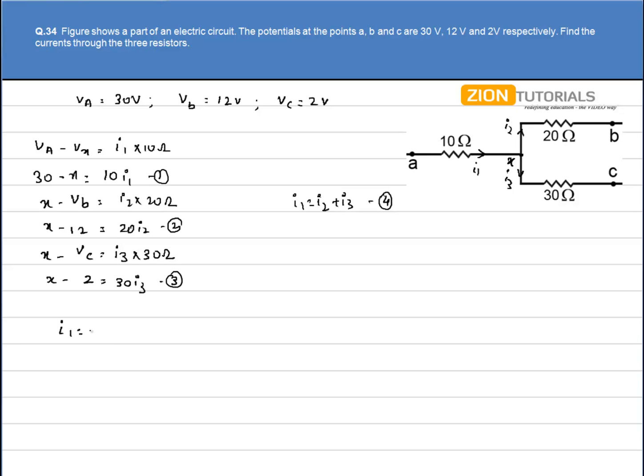I1 is 1 ampere, I2 is 0.4 ampere, and I3 is 0.6 ampere. That is my answer.